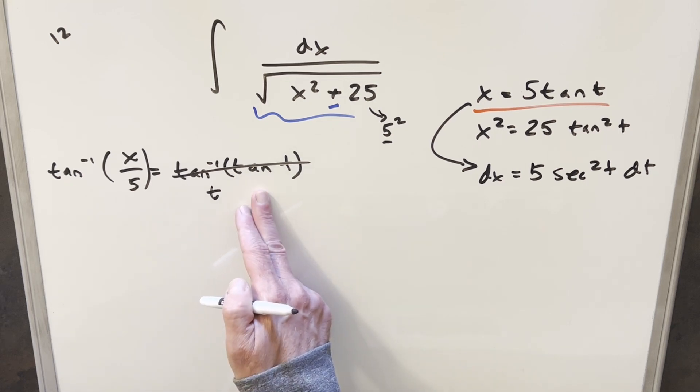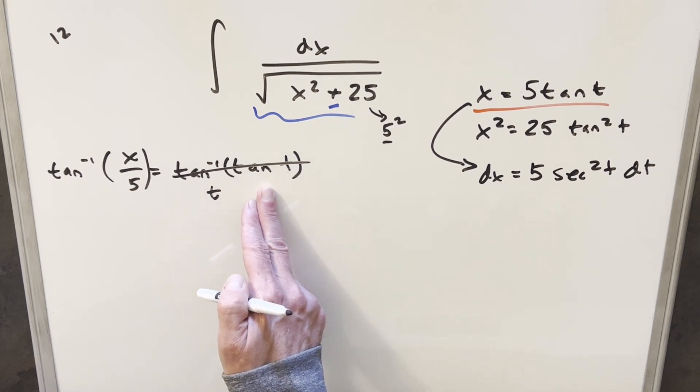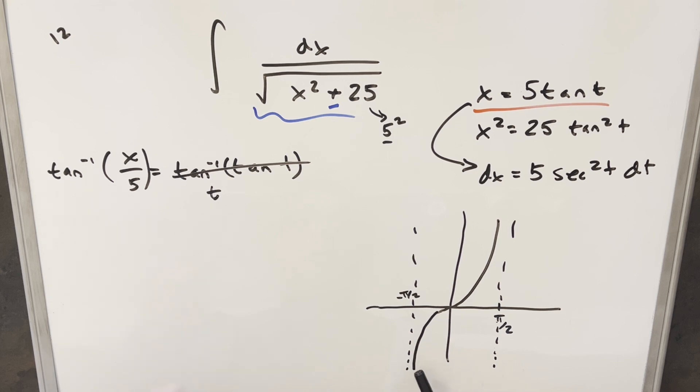But then just notice, this isn't really true all the time. Let's just look at a graph of tan of t. So we have our rough graph over here to the right. And I'm just looking at tan of t between minus pi over 2 and pi over 2.